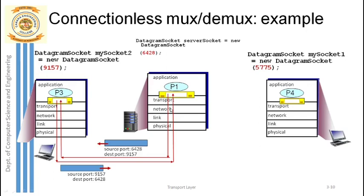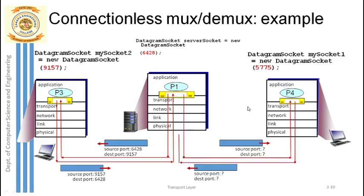Once the message reaches the server, it arrives through the destination port and reaches process P1. When P1 sends a response, it simply reverses the source and destination port numbers. So the source port becomes 6428 and the destination port becomes 9157, and the response is correctly sent back to P3.